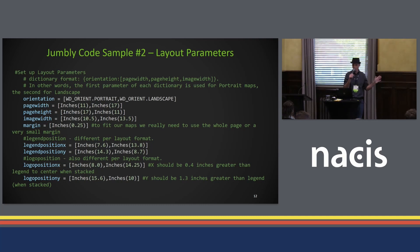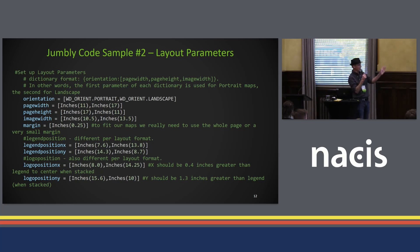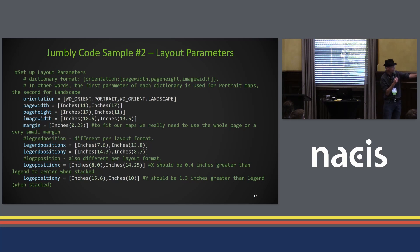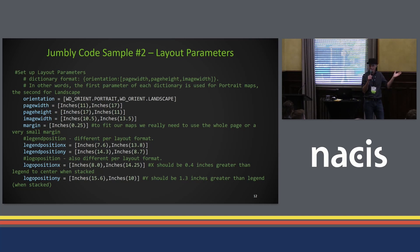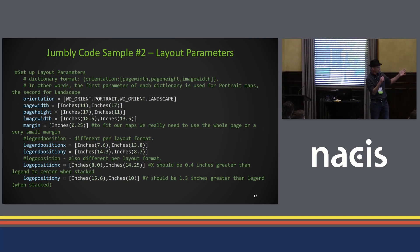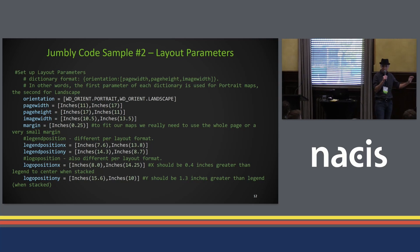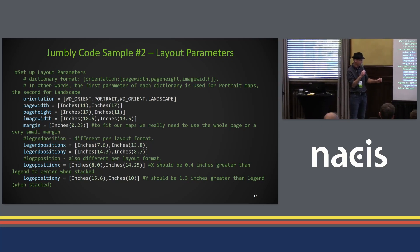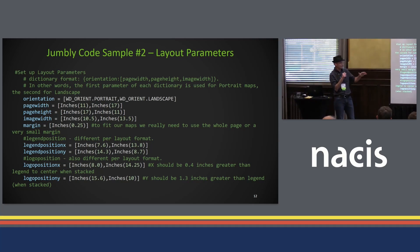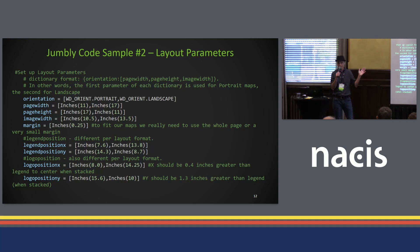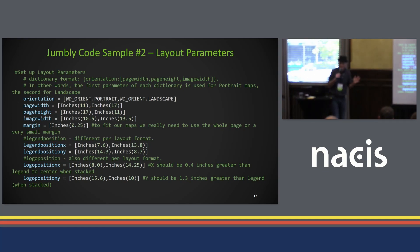I wanted to do both portrait and landscape, so I had to set out layout parameters in a set of code. On the left-hand side you see basically the pieces that are for portrait, and on the right-hand side the pieces for landscape. I have basically the page width and height — you can see I'm making 11 by 17 maps here. Where I'm putting the legend was slightly different for portrait and landscape. Same for the logo, and it's straight up Python — pretty standard, straightforward stuff.